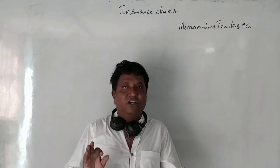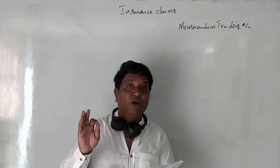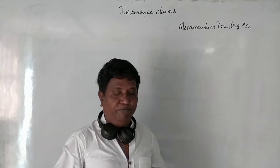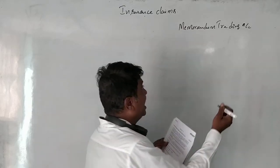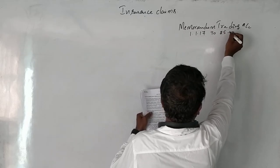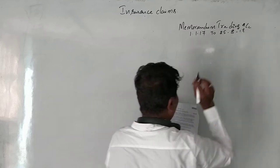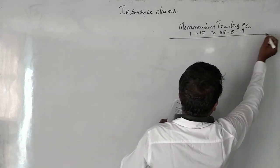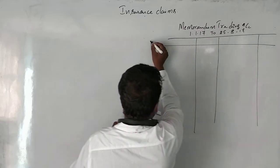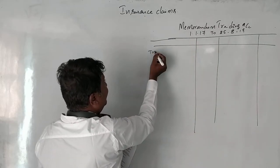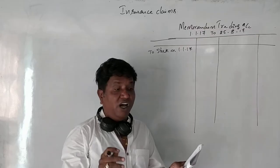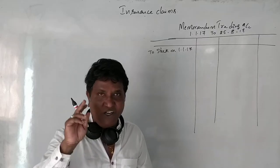First, note the gross profit ratio is 33⅓% — remember this rate. Now we prepare a Memorandum Trading Account for the period 1/1/2017 to 25th August 2017. The first entry is opening stock: stock on 1/1/2017.